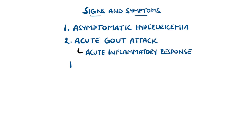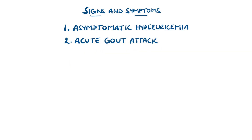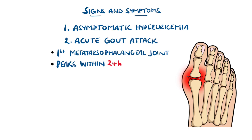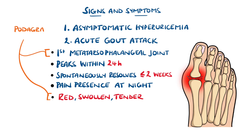Acute gout attacks can be triggered by local trauma, starting new medications, having an operation or being unwell, and even alcohol binges. There is acute pain most commonly in the first digit metatarsophalangeal joint — that's to say the base of the big toe — that peaks within 24 hours and will usually spontaneously resolve within two weeks. The pain often wakes up the person at night and can feature a red, swollen, and very tender joint. This classic presentation on the big toe is known as podagra.